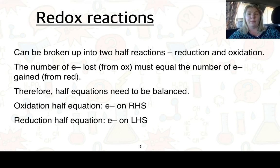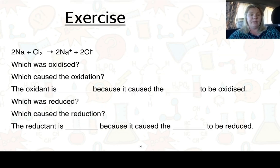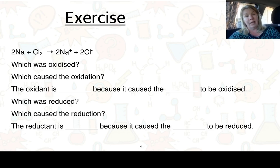Redox reactions can be broken up into two half reaction equations: reduction and oxidation. The number of electrons lost from the oxidation must equal the number of electrons gained from the reduction. Therefore the half equations need to be balanced — electrons are on the right hand side for oxidation and on the left hand side for the reduction half. So here we've got 2Na plus Cl2 goes to 2Na+ plus 2Cl−. Fill in the gaps in your notes — identify which was oxidised, what caused the oxidation, which was the oxidant, which was reduced, and which caused the reduction. We'll go through the solutions in class.